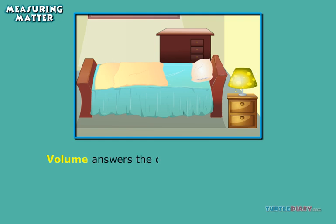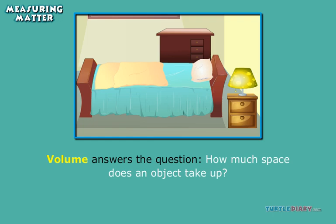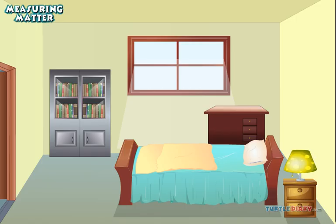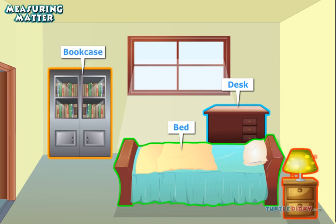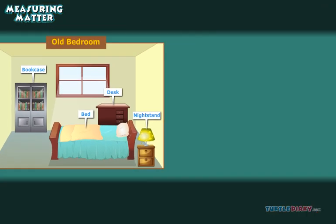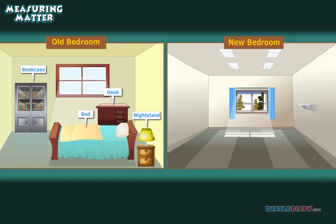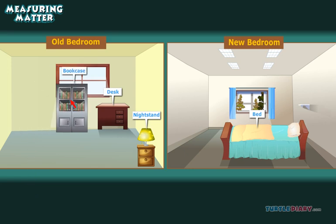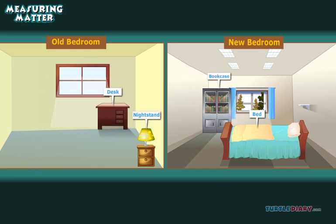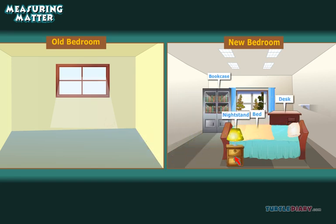Volume answers the question: how much space does an object take up? Which of these objects takes up more space — the desk, the bed, the bookcase, or the nightstand? Obviously, the bed is taking up the most space. It looks like the bookcase is next, then the desk, and the nightstand.